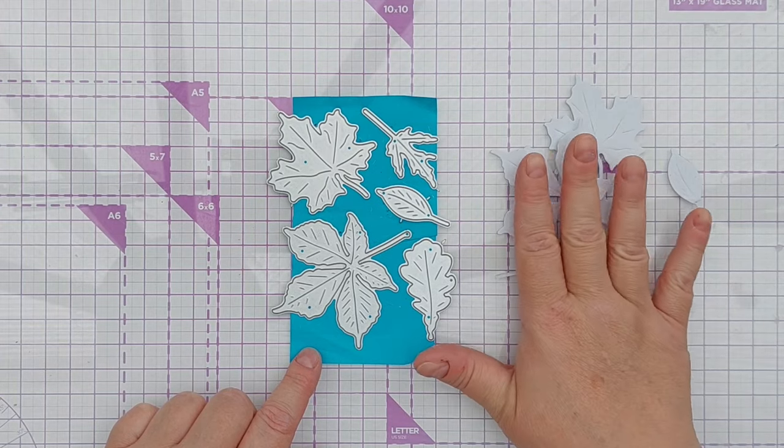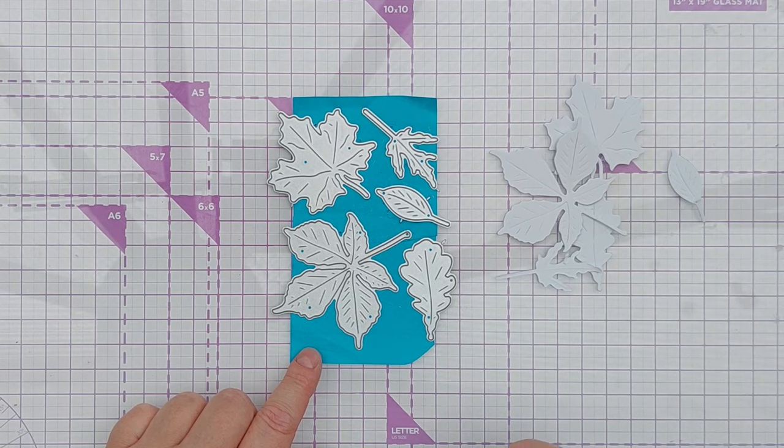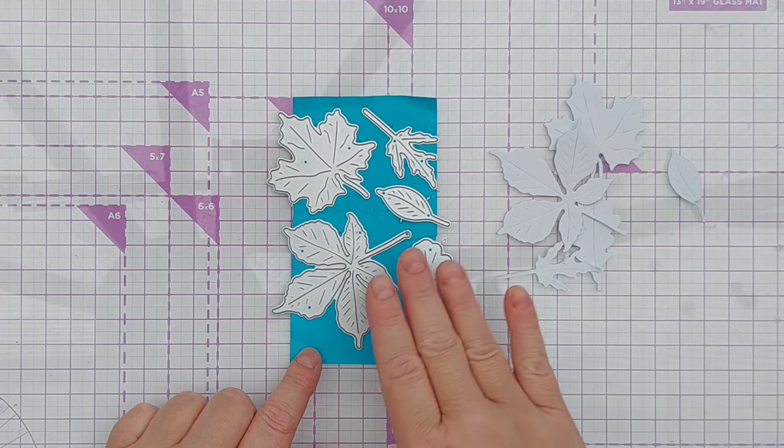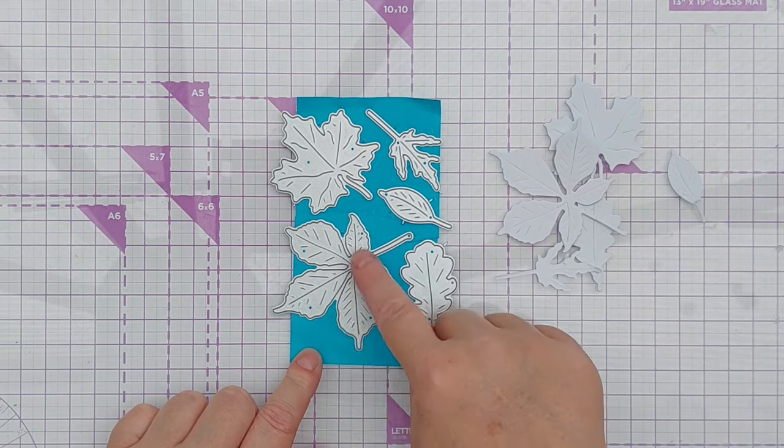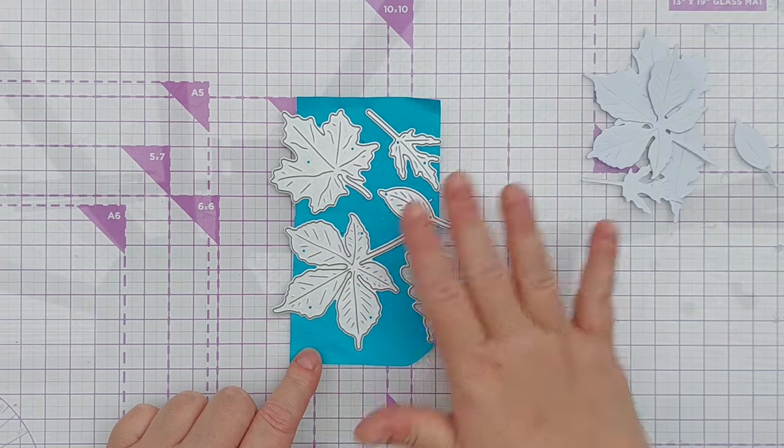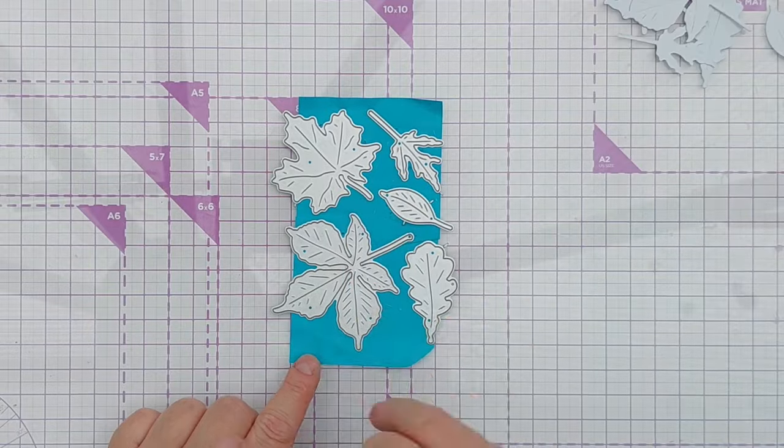I cut some out of smooth white cardstock but I'm going to do another set because I want two of each. I thought I'd show you how I did it because these leaf dies cut the leaf shapes and they also emboss these lovely veins. You have to run it through your die cutting machine twice to really get the most out of these dies, but I'll show you what I did.